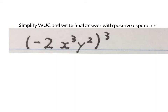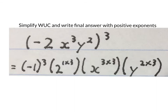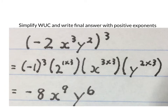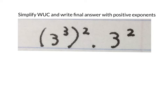The next expression looks like this. We will cube everything inside this bracket. We take that minus 1 and we will cube it. Write the 2 down with the power of 1 and multiply that 1 with that 3. Write the x down and times the 3 with that 3. Write the y down and times that 2 with that 3. Final answer: minus 8, x to the power of 9, y to the power of 6.